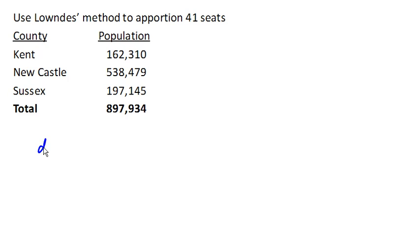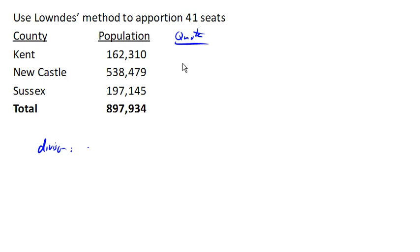It starts out the same way — we find our divisor, which we've done a few times now. We take our population and divide it by the number of seats, and then divide each population by the divisor to get our quotas: 24.5872 and 9.0017.